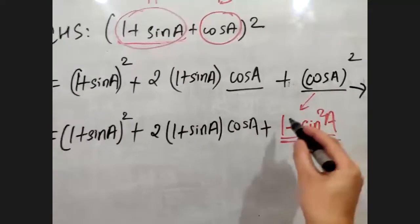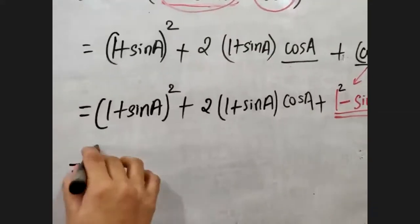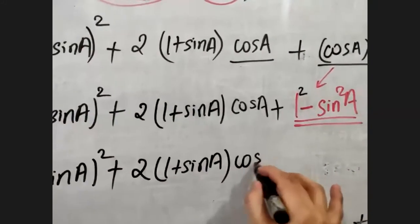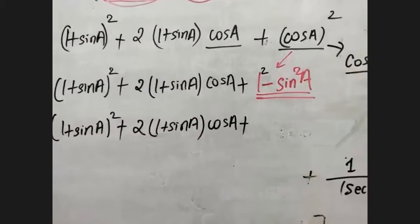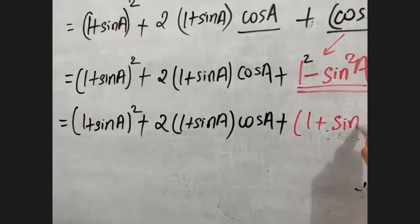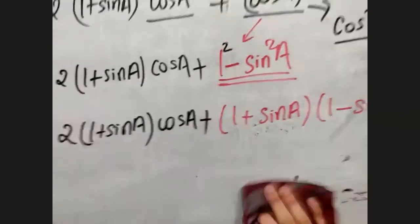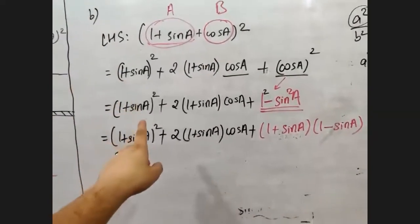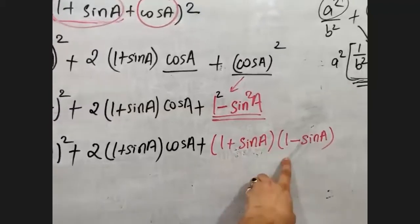Copy the first part (1 + sinA) as it is, and the middle term 2(1 + sinA)cosA as it is. For the last part, one minus sin²A is in the form of a² minus b², where a is one and b is sinA. So a² minus b² equals (a + b)(a minus b), giving us (1 + sinA)(1 - sinA). So the third term becomes (1 + sinA)(1 − sinA).